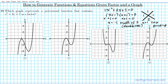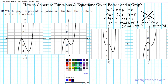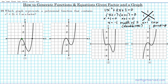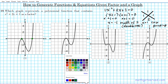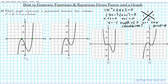Looking at option one, we have a double root here and another root here. That tells me that the roots of this polynomial function are x equals negative one — because it's a double root, it has a multiplicity of two — and the other root is x equals two. Do we have a match already? Absolutely. We have x equals negative one with a multiplicity of two as part of the solution, and we already have it manifested here.